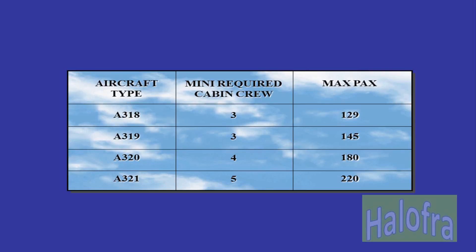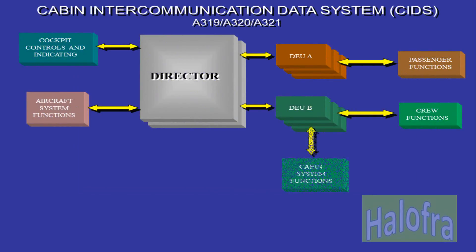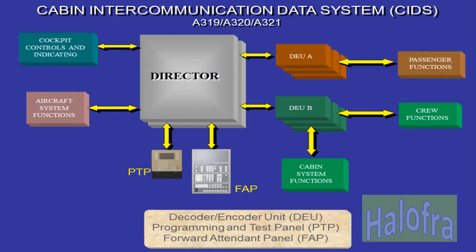This is a standard cabin layout for these four aircraft types. Various cabin systems are controlled, tested and monitored by the Cabin Intercommunication Data System, CIDS.